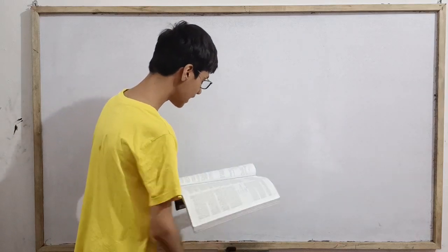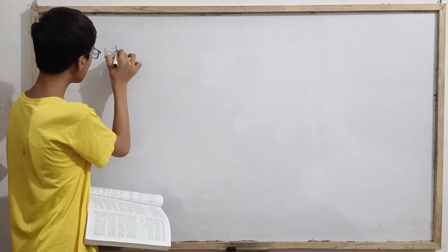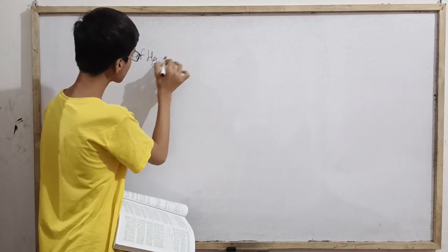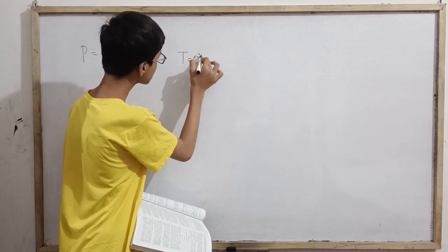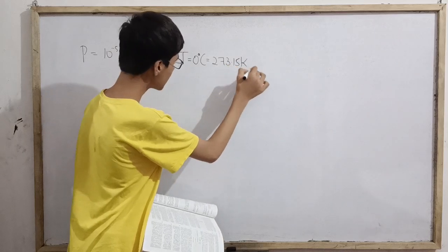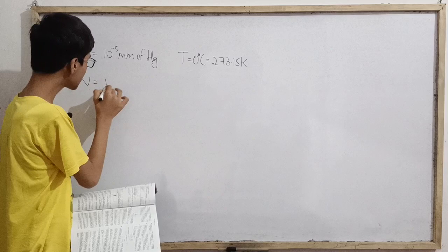Since it's an easy question, all we have to do here: pressure given is 10 to the power negative 5 millimeter of mercury. Temperature is zero degrees Celsius which we will put as 273.15 Kelvin. The volume given is 1 cubic centimeter.